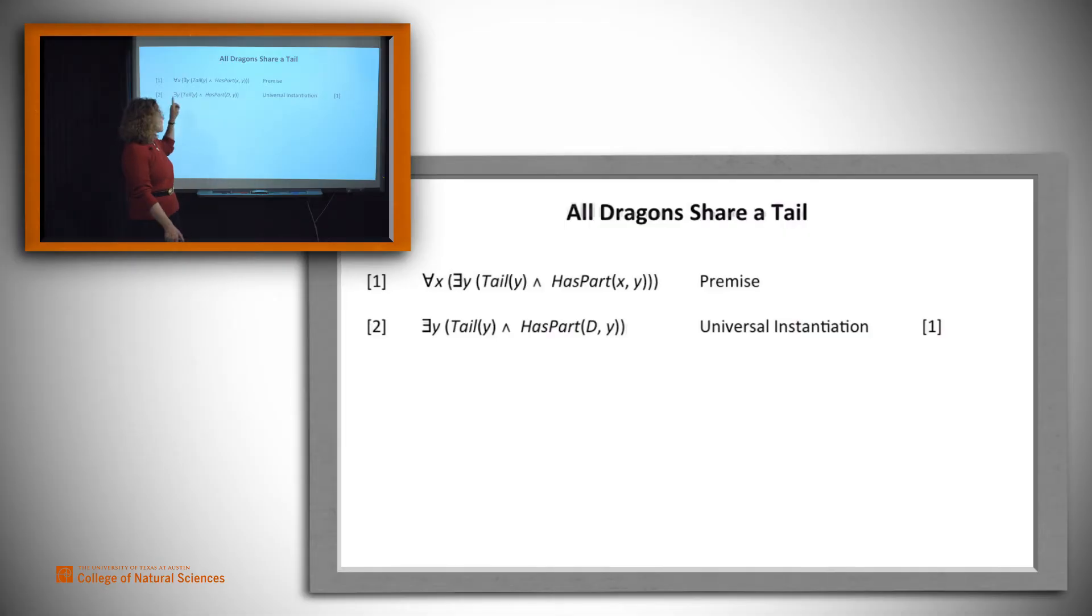Now let's deal with the existential quantifier. We'll use existential instantiation and say, well, if there exists a tail, then let's just call it T. We don't know anything else about that tail. We'll call it T. So T is a tail, and D has T as a part.